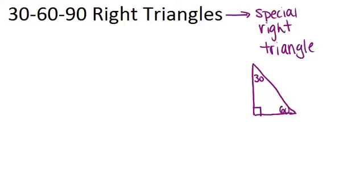Now, there's a special pattern that exists between the three sides of a 30-60-90 triangle. And to figure out what that pattern is, we're going to look at an equilateral triangle.